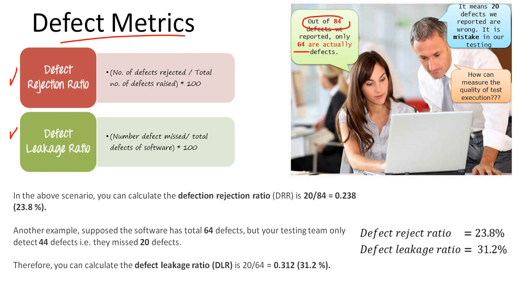Based upon these numbers, let's calculate. In the above scenario we can calculate defect rejection ratio, or DRR. Number of defects rejected is 20, divided by total number of defects we raised, which is 84. So 20 divided by 84, we get 0.238. If we calculate this in percentage, 23.8 percent of the defects come under defect rejection ratio.